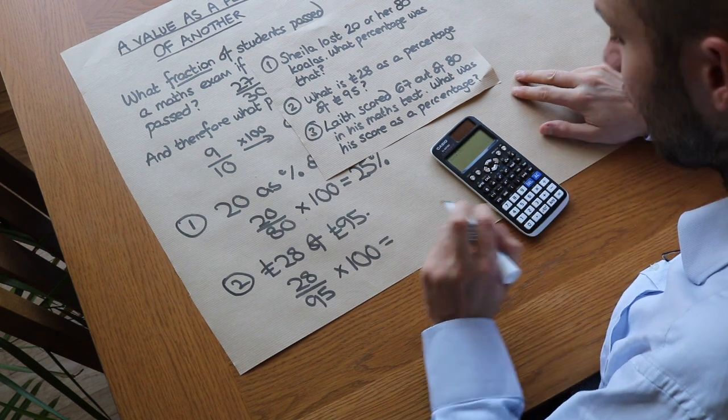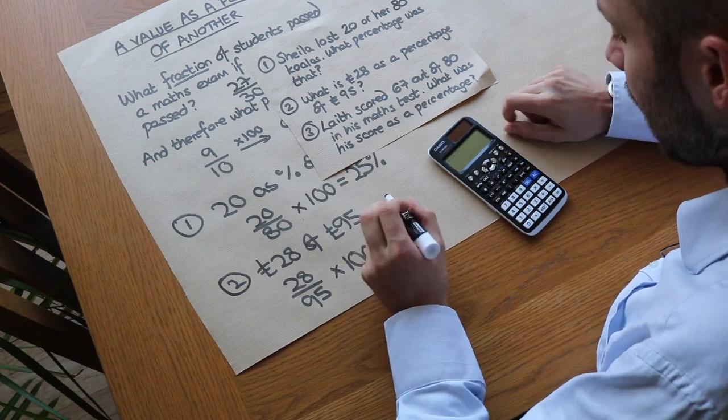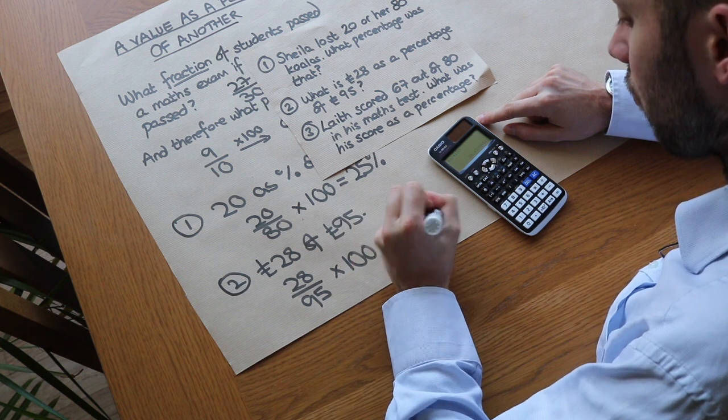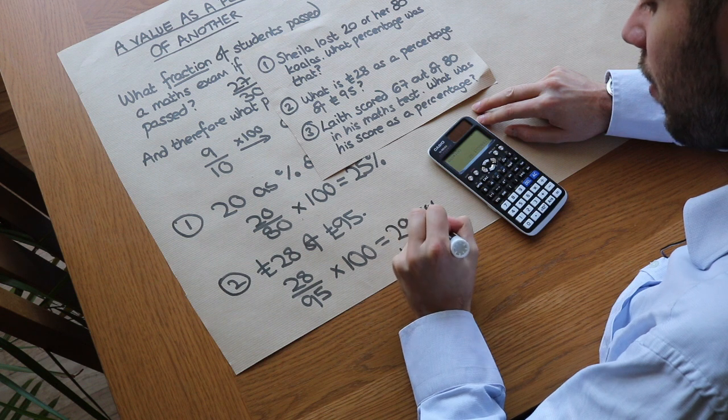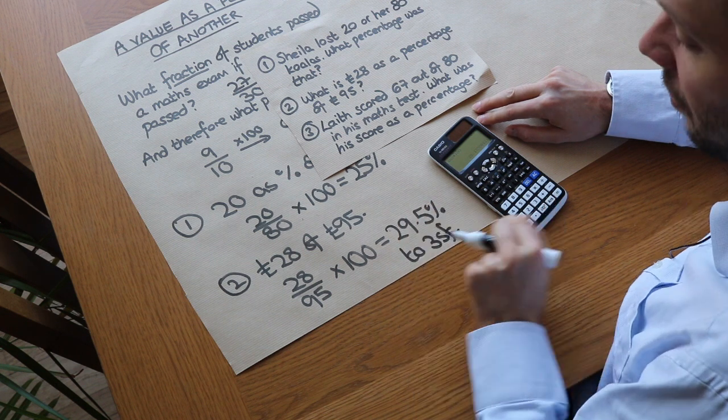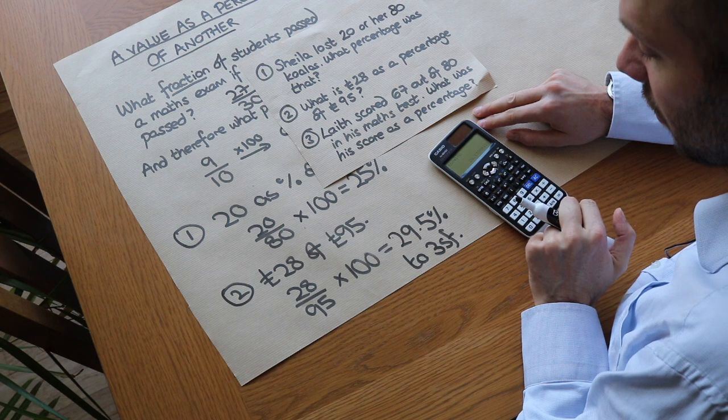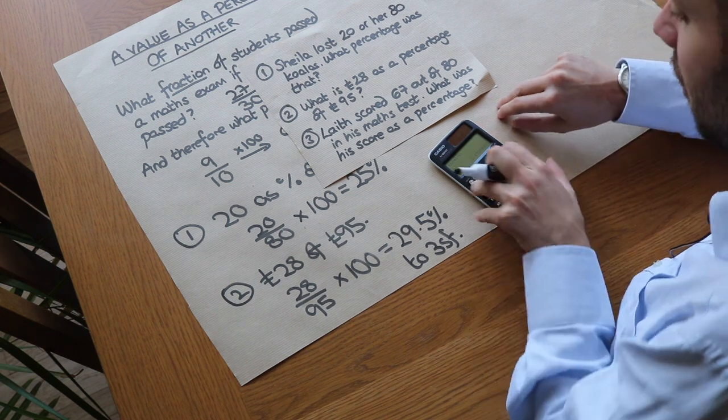Press the SD key and we can see it is 29.5 percent, and I've rounded that to three significant figures. Do you remember that significant figures just means that you're keeping the first three digits starting from the first non-zero digit.